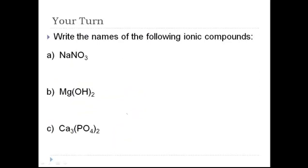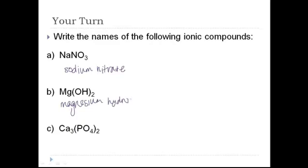Try a couple on your own. Hit pause and come back when you're done. Here are your answers. Na is sodium and NO₃ is nitrate. Mg is magnesium and OH is hydroxide — you've got to memorize that one; it's a little tricky — OH minus is hydroxide. And last one, you should have calcium phosphate.